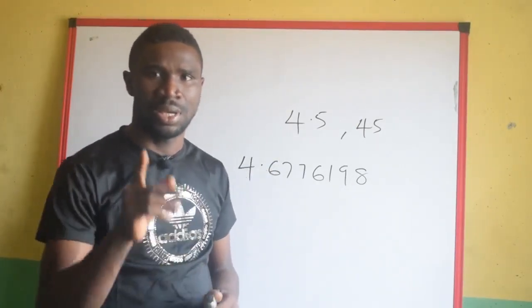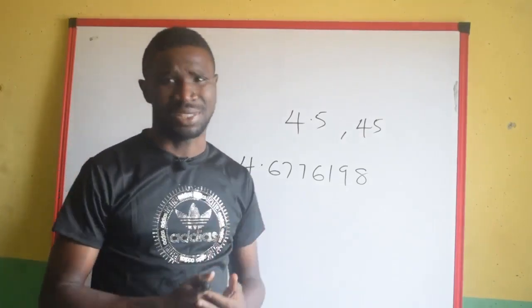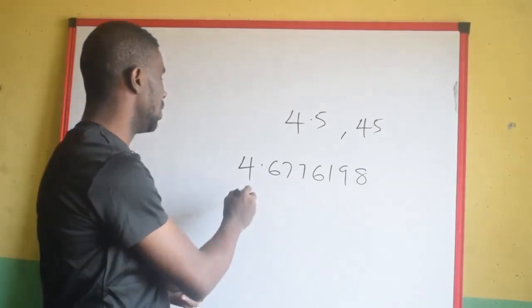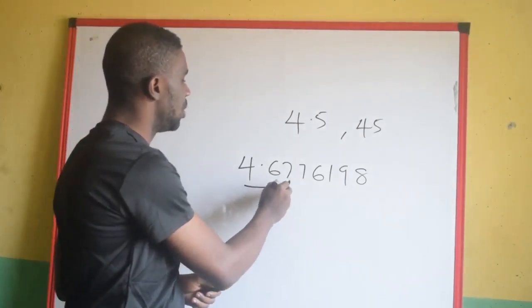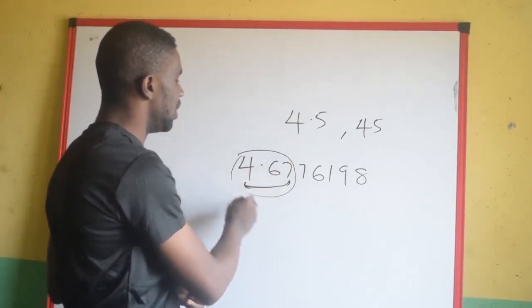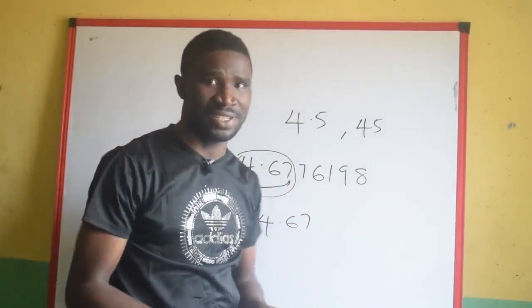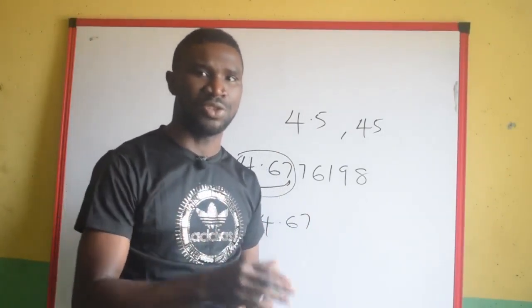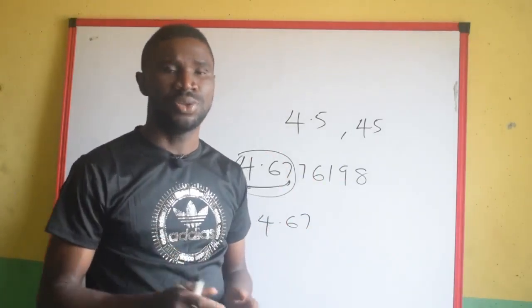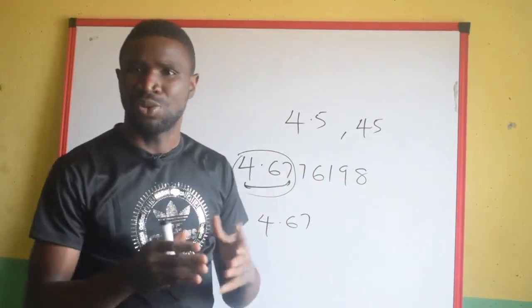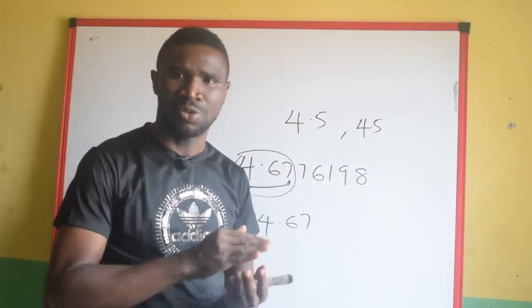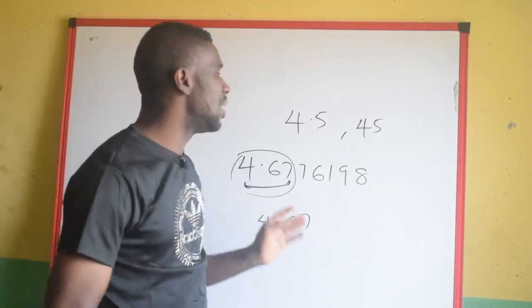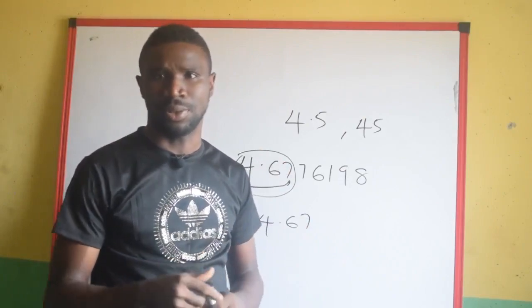The essence of approximation is that you, as a student, should try to limit the number. We may not be interested in seeing the entire thing — we just want to see from here to here. If you can give us 4.67 as the answer, we are okay with that. That is why you will be forced to approximate. Anytime you are asked to approximate or to round up, just know that nobody wants to see the entire number — we just want you to limit it to specific numbers. Your ability to understand how to limit it is what this topic is all about.